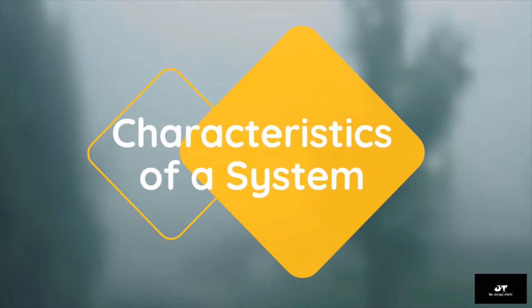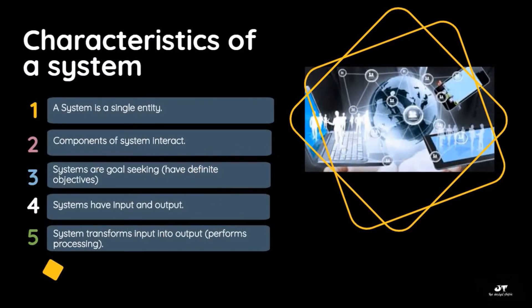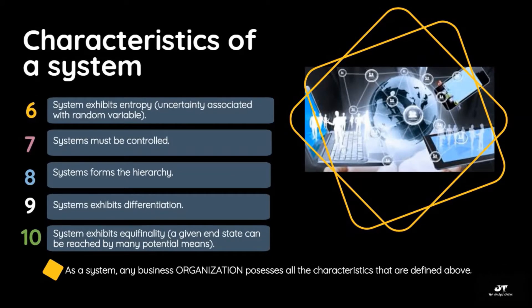A system possesses certain properties. A system is a single entity, and its components interact with each other. Systems are goal-seeking and have definite objectives to meet. Systems have input and output, and transform input into output through processing. A system exhibits entropy — it behaves awkwardly when exposed to unrecognized variables. Systems must be controlled for effective output. Systems form a hierarchy, with components working in a hierarchical way. Systems exhibit differentiation, as various systems exhibit different properties. A system also exhibits equifinality — it can reach a given end state through many potential means. Any business organization possesses all these characteristics.